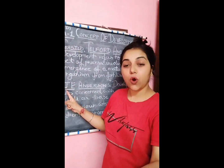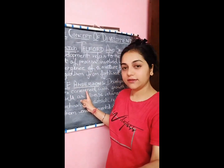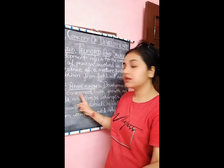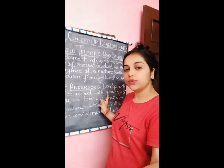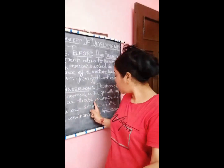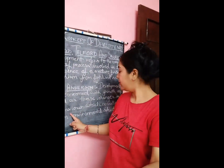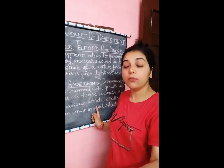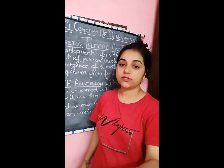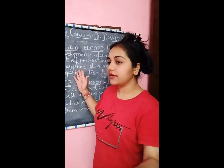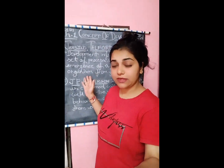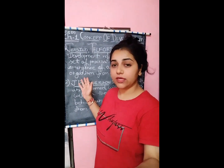Second, according to J.E. Anderson, development is concerned with growth as well as those changes in behavior which result from environmental situations. We all know that environment has a great impact on human behavior — it affects our genes too. These are two very famous definitions of development given by two popular thinkers.